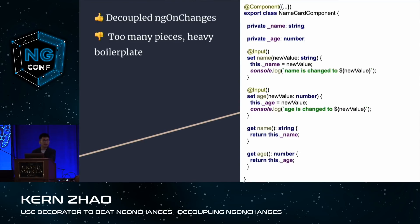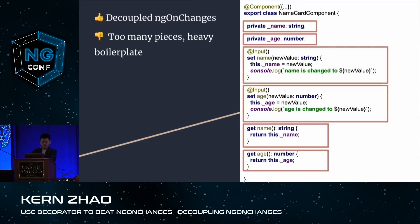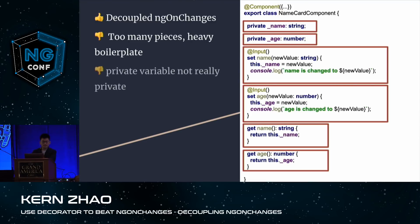However, there are several cons I don't really like. First, too many pieces — for just two input properties, we need six pieces. They can be rearranged in any order, which makes the code hard to maintain and hard to read. And the getter function and private variable declaration are just boilerplate.